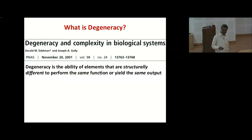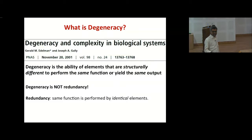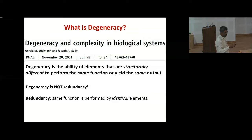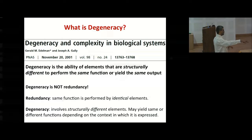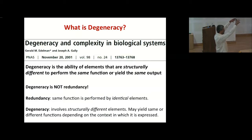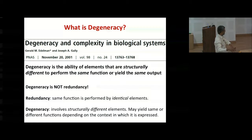Degeneracy is not the same as redundancy. Redundancy is about the same function being performed by identical elements — if one fails, the other takes over. Degeneracy, on the other hand, involves structurally different elements: two completely different sets of structural components come together to perform exactly the same function, where functionally you would not see a difference, but the underlying structures are very different.